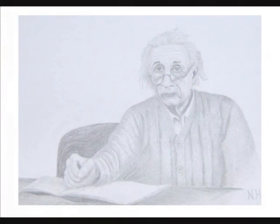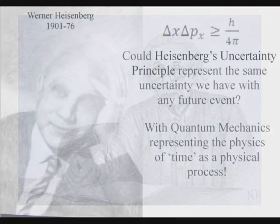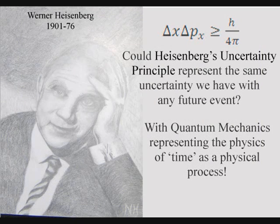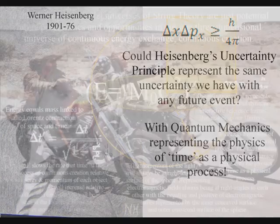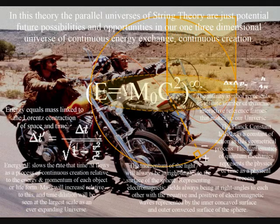This can be seen mathematically with Heisenberg's uncertainty principle of quantum mechanics representing the uncertainty of everyday life at the smallest scale of this process.